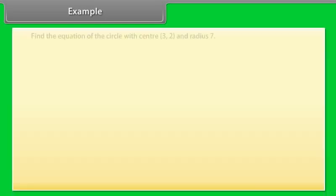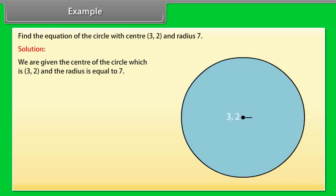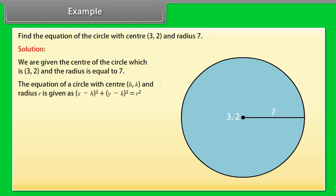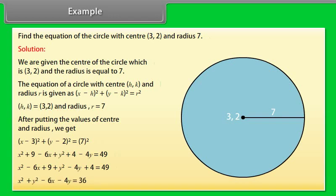Example: Find the equation of the circle with center (3, 2) and radius 7. Solution: We are given the center (3, 2) and radius equal to 7. The equation of a circle with center (h, k) and radius R is: (x − h)² + (y − k)² = R². With h = 3, k = 2, and R = 7, we get (x − 3)² + (y − 2)² = 49. Expanding, we get x² + y² − 6x − 4y = 36.